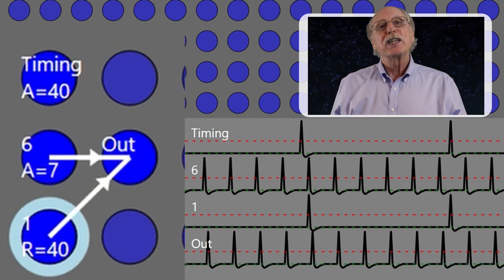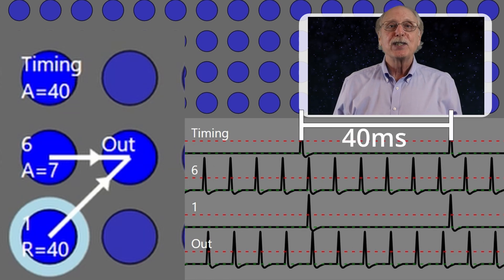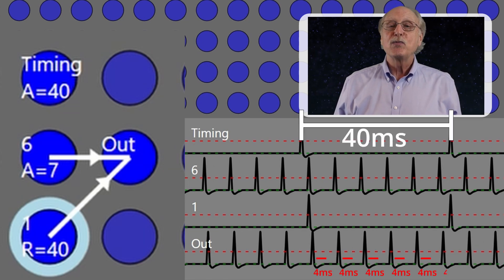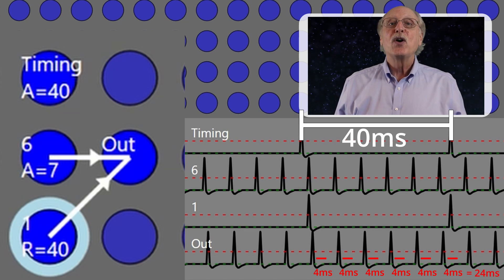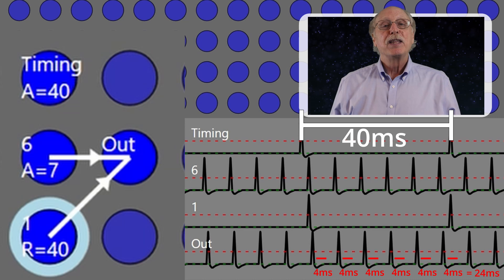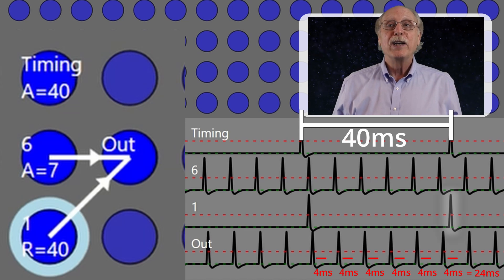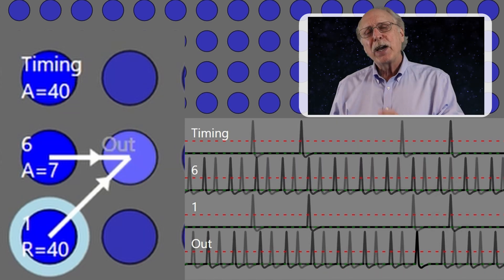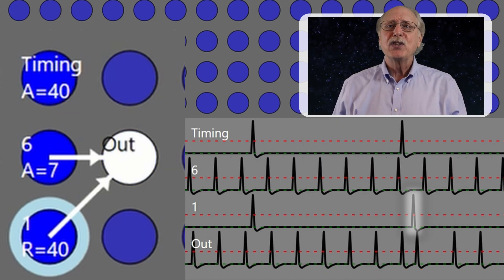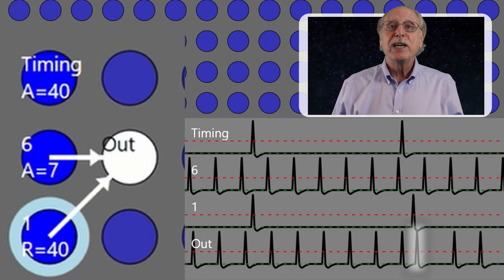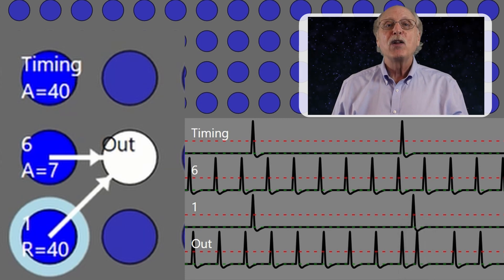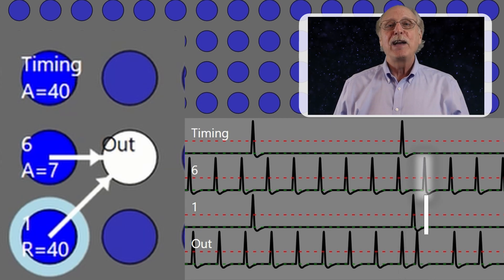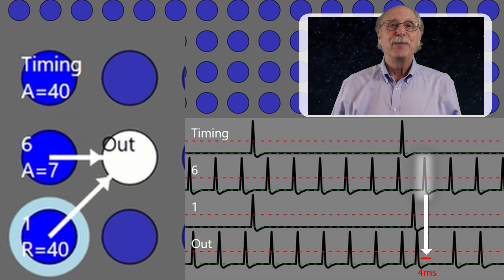Looking just at the value of 6 during the 40 millisecond time segment, OUT will be in its refractory period for 24 milliseconds. So there is a 60% probability that our signal from '1' will arrive during a refractory period and be ignored. If our 1-spike happens to sneak in and cause OUT to fire, the following spike from '6' will arrive during OUT's refractory period and be ignored.